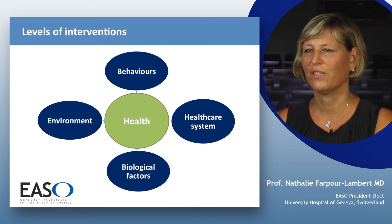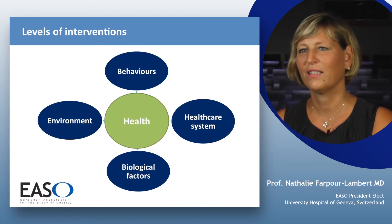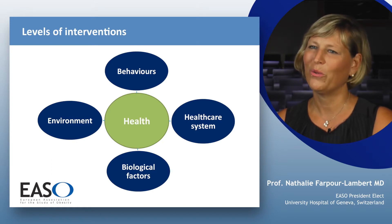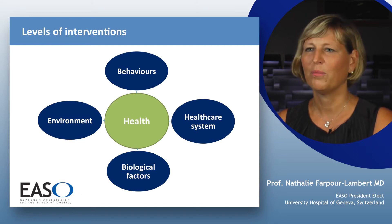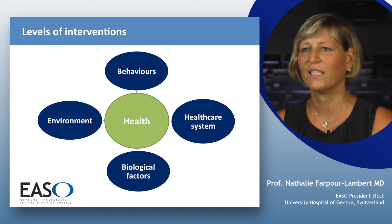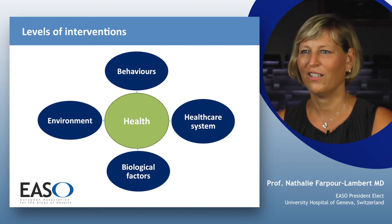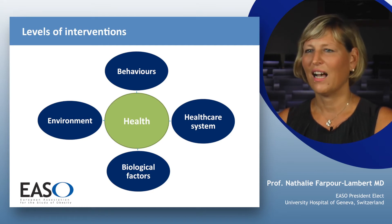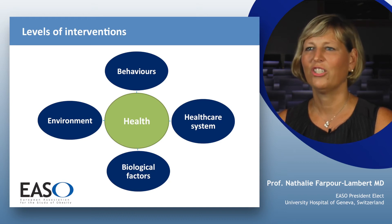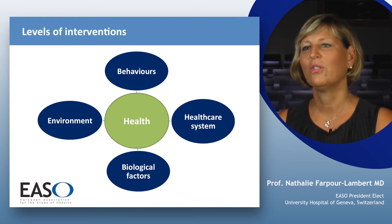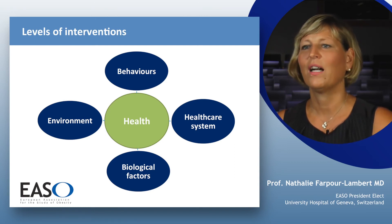There are different levels of intervention. We can try to change behaviors — individual behaviors — but we all know that it's very difficult to change in an obesogenic environment. The promotion of high-density food, promotion of sugar-sweetened beverages, as well as reduced physical activity due to increased transportation make changes difficult. So we should not ask people to change without changing their environment. There is a need for political decisions and changes in regulation to improve the well-being and the environment of the population.